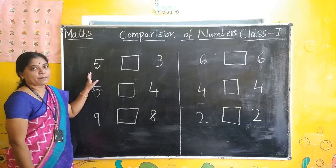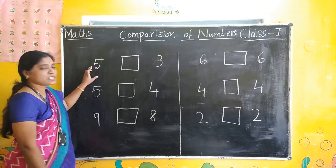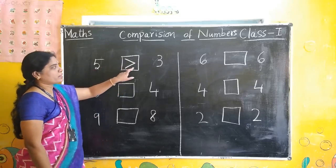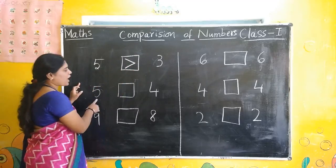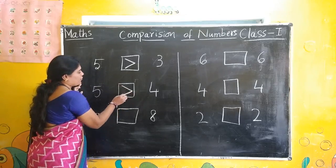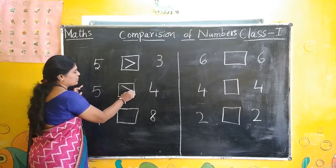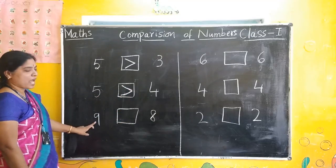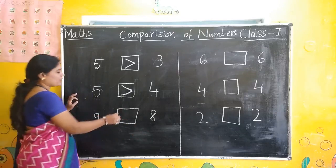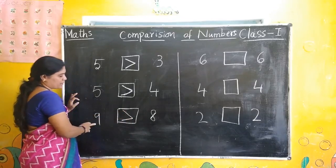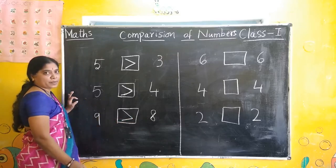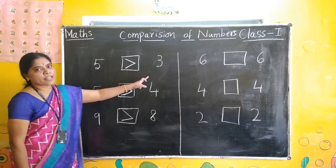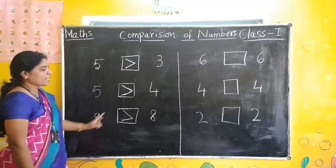Now we will write greater than. Look here. Read the number: 5, 3. 5 is the biggest number. So write this symbol. How to read this one? 5 is greater than 3. Next: 5, 4 — 5 is the biggest number, so we are writing this symbol. 5 is greater than 4. Next one: 9, 8. 9 is the biggest number. Open the mouth towards the biggest number — this sharp one shows smallest number. 9 is greater than 8.